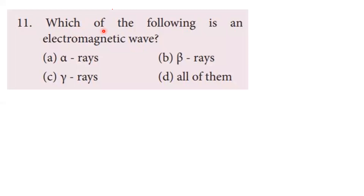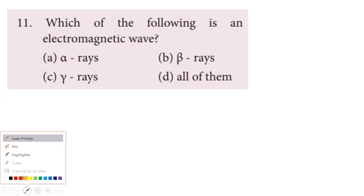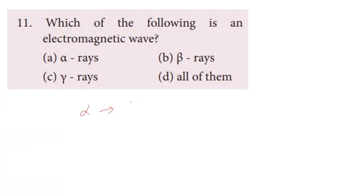Eleventh question: which of the following is an electromagnetic wave? Alpha rays consist of helium nuclei — 2 protons and 2 neutrons. Beta rays are fast-moving electrons. Gamma rays are electromagnetic waves with oscillating electric and magnetic fields perpendicular to their propagation. Therefore, gamma rays are the correct answer.